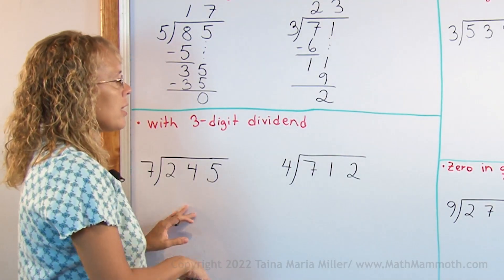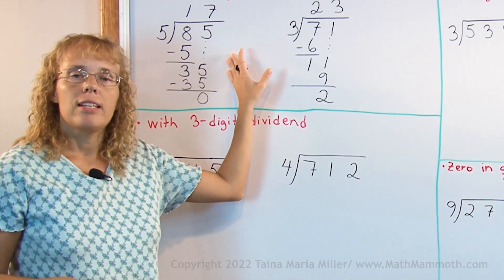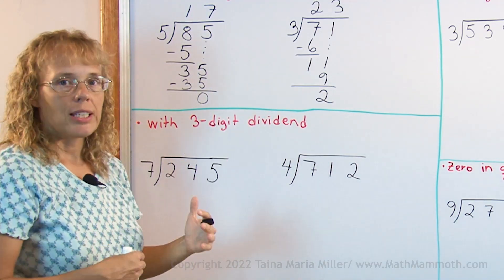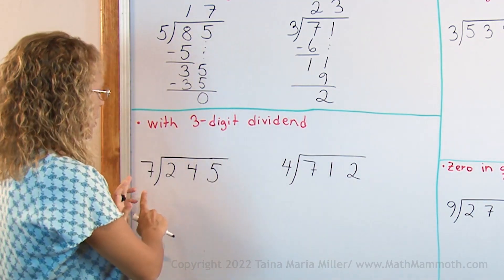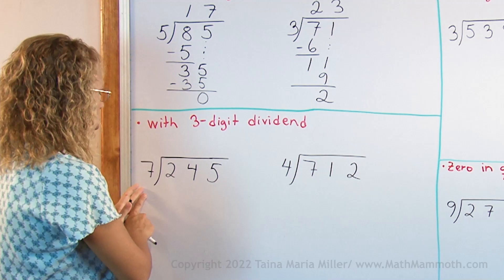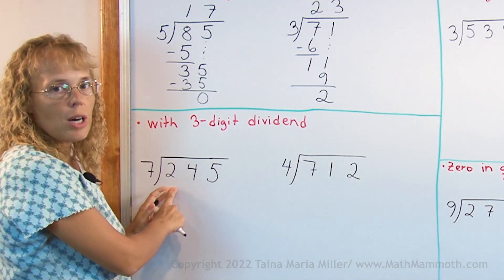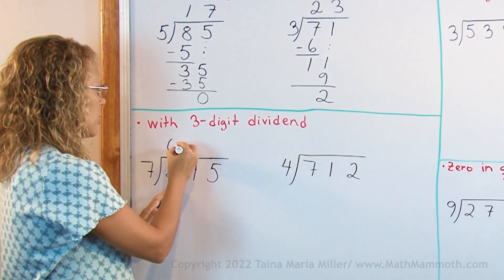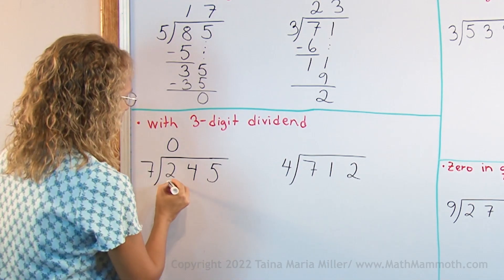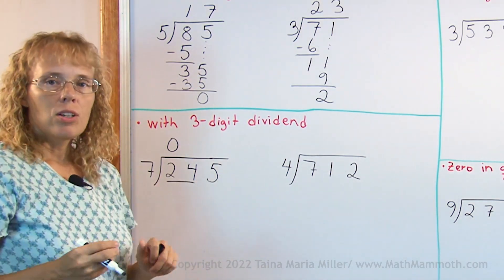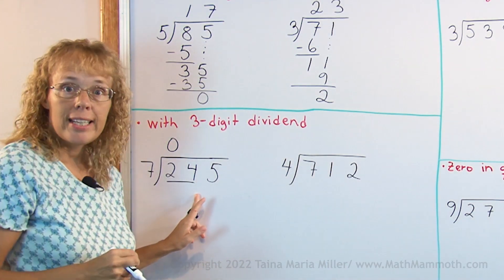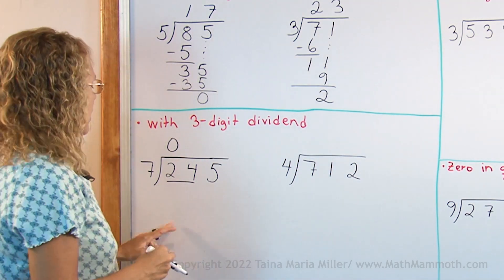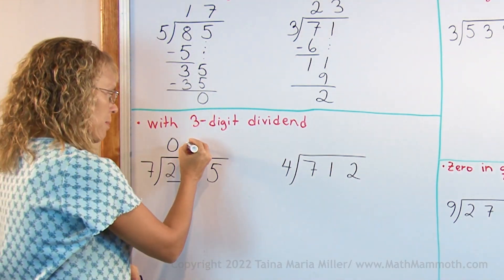With 3 digit dividend, the process is exactly like here. It just has more steps. It takes longer. We think, how many times does 7 go into 2? That's 2 hundredths now here. 0 times. And therefore, we will look at these 2 digits. Combine the 2 hundredths with 4 tens, and we have 24 tens. And 7 goes into 24, 3 times.